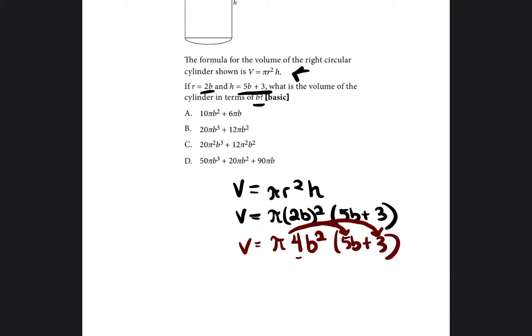So we're going to multiply the numbers. 4 times 5 is 20. And then we're going to keep the pi by itself because there's nothing to multiply it against. And then we're going to multiply b squared times b.